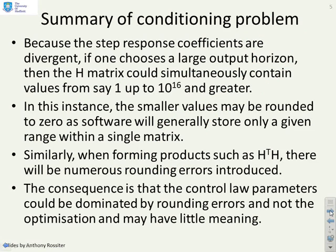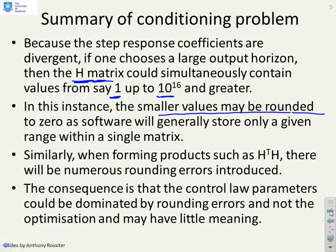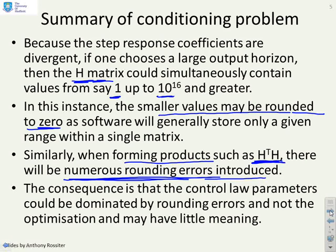Because the step response coefficients are divergent, if you choose a large output horizon the H matrix could simultaneously contain values from 1 up to 10 to the power of 16 or bigger. Software like MATLAB stores 16 decimal places, but industrial software may not. The smaller values may end up being rounded to zero, and this problem is made worse when forming products such as H-transpose times H, leading to heavy rounding errors. The consequence is that the control parameters could be dominated by rounding errors rather than the optimisation.